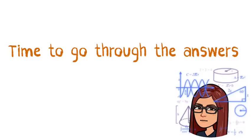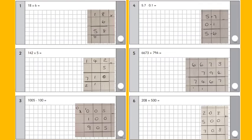Time to go through the answers. The first one, nice and simple, 18 multiplied by 6. You could have done this two ways: you could have either done this with the method that you can see on the screen now, or you could have partitioned it and done 8 times 6 and 10 times 6 and then add the numbers together.